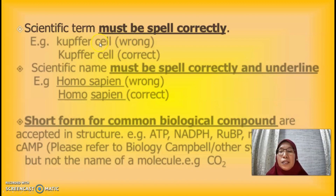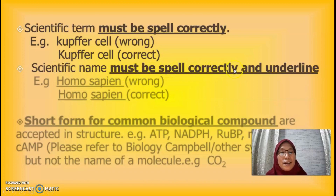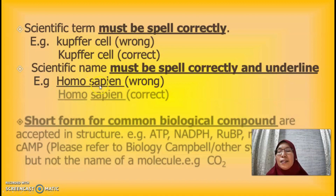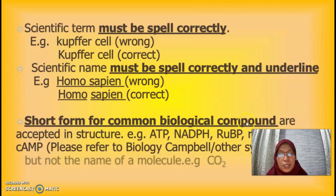Scientific terms must be spelled correctly, especially regarding capital and small letters. For scientific names, the genus must start with a capital letter and the species with a small letter. Both the genus and species must each be underlined separately. For example, 'Homo sapiens' — the genus 'Homo' is capitalized and underlined, and 'sapiens' is in lowercase and underlined separately.